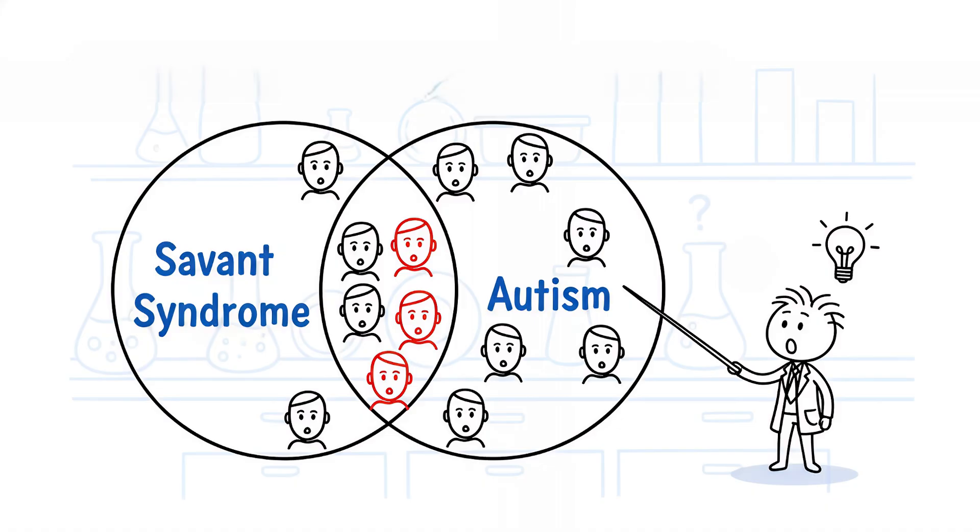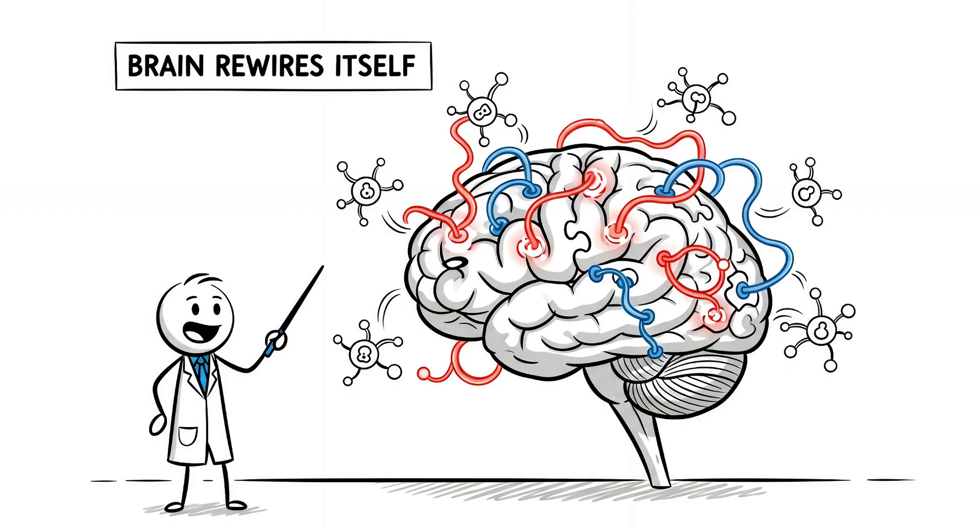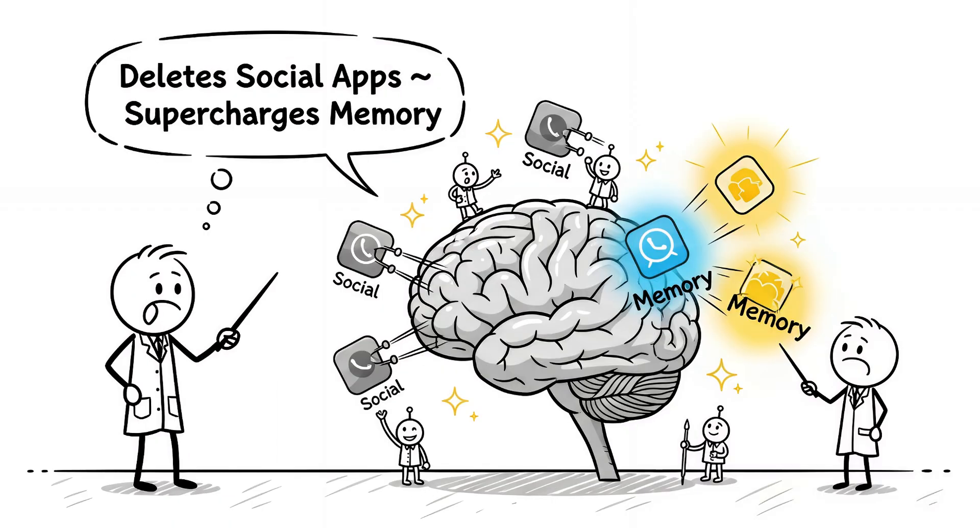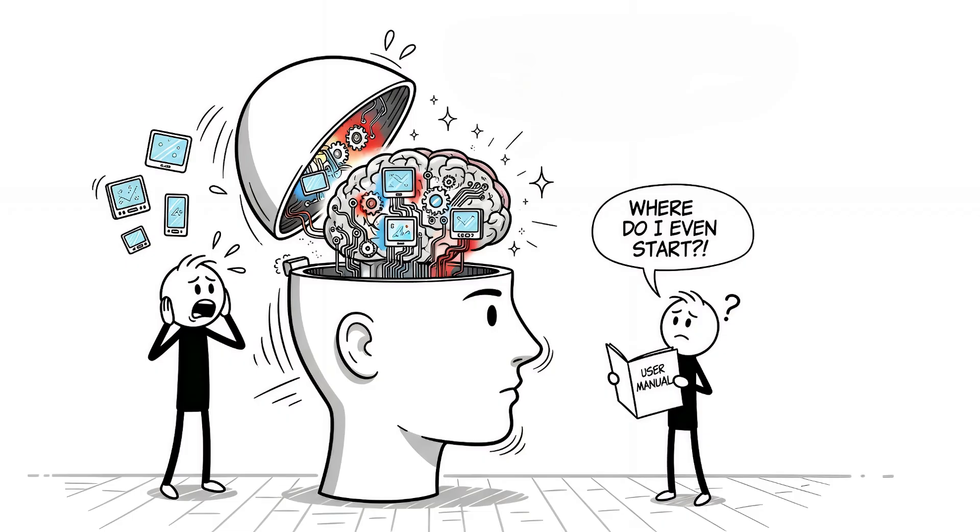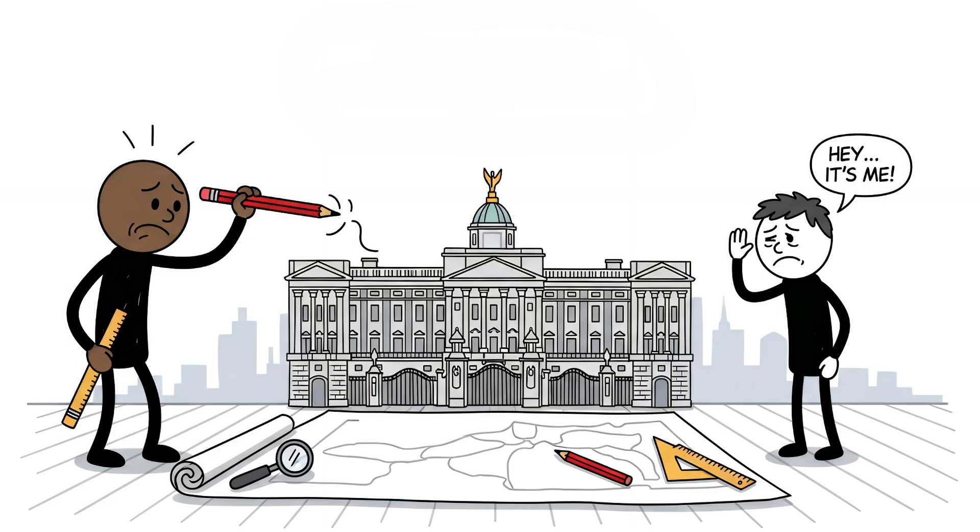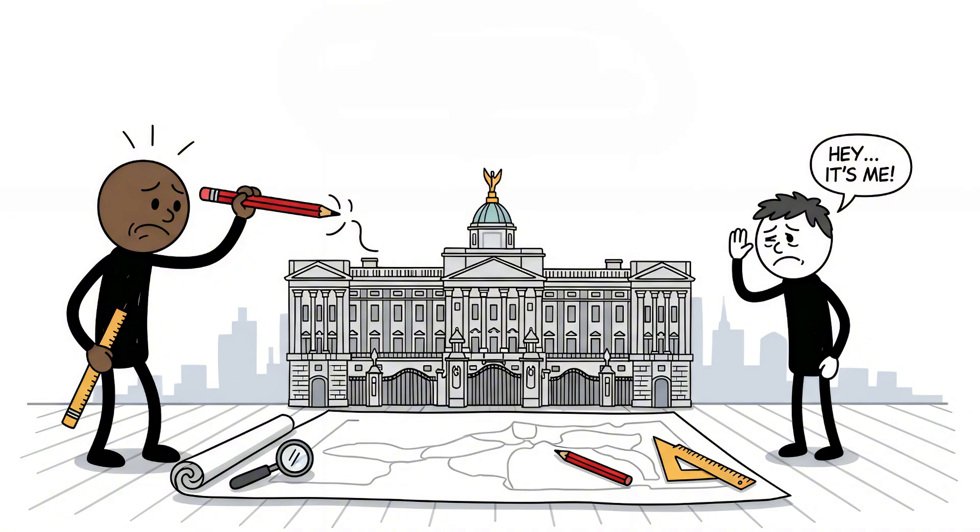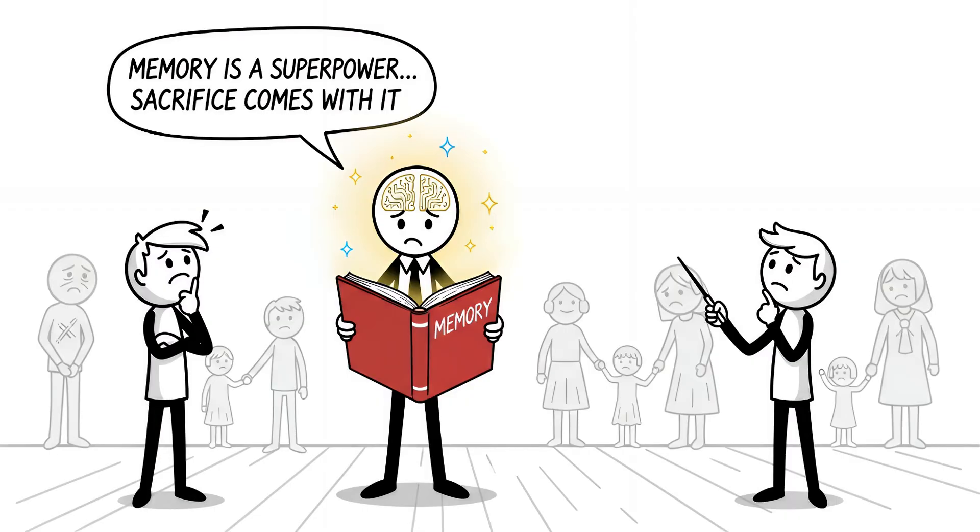About half of savants have autism. Scientists think the brain rewires itself. It deletes the social apps to supercharge the memory processor. Your brain becomes a supercomputer, but you lose the user manual. Stephen can draw every brick in Buckingham Palace, but might not recognize his own brother's face. He can memorize a map of Tokyo, but can't order coffee without help. Memory is a superpower, but you have to sacrifice your humanity to get it.